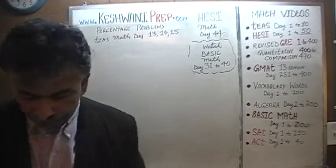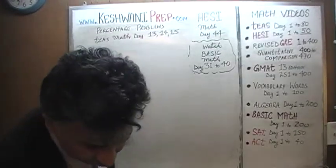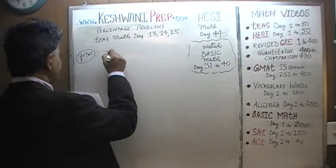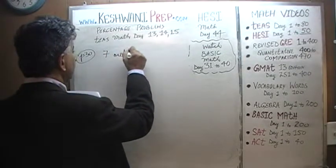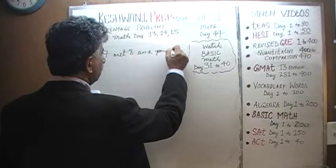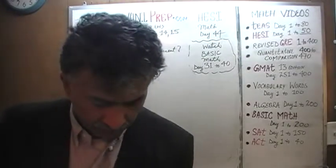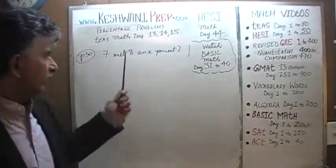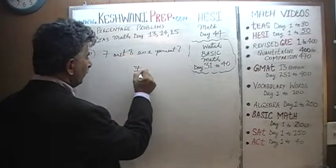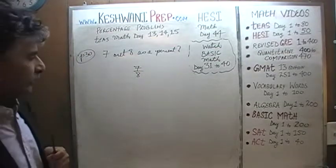Let's get going — number 1. We are being asked to convert. It says: what is 7 out of 8 expressed as a percentage? 7 out of 8 as a percentage — let's find out. 7 out of 8, which of course is the same as 7 over 8. There are two ways you can go about it and I'm going to show you both ways.